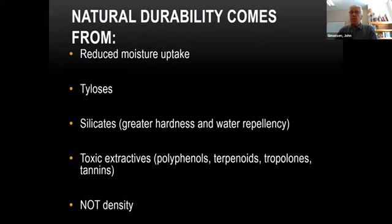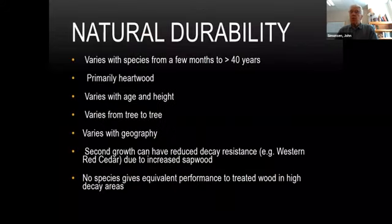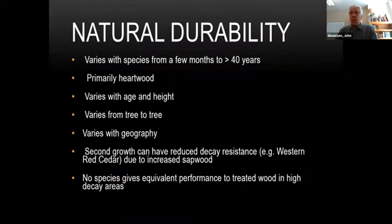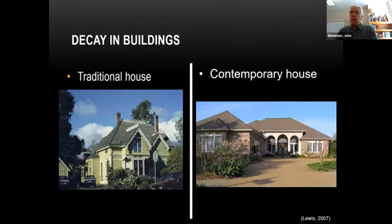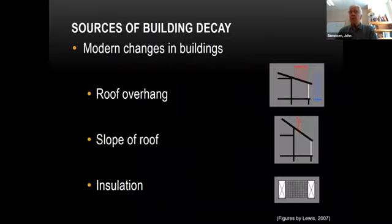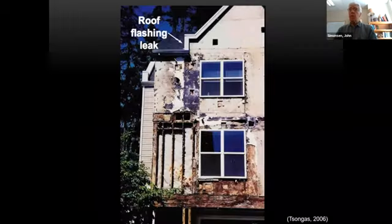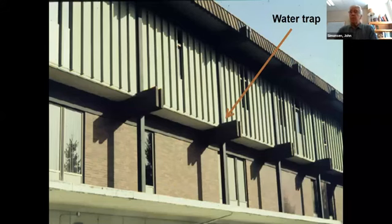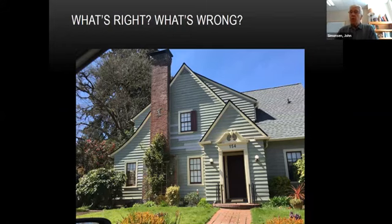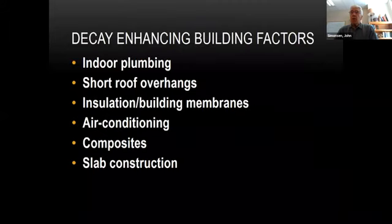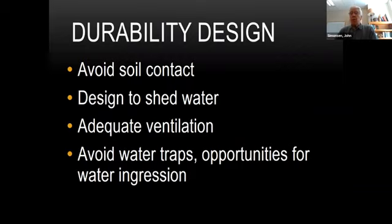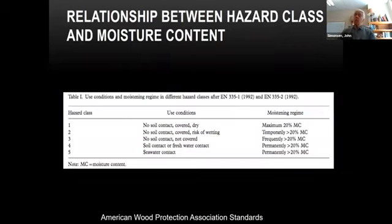We briefly covered woodpeckers, bears, and beavers that can cause wood problems, but not typically in a suburban setting — except maybe woodpeckers. Then we covered natural durability and wood protection: sapwood and heartwood, with sapwood being less durable than the heartwood. We covered different kinds of house designs and what to look for in terms of reducing moisture intrusion and preventing wood decay. The whole idea is common sense: you want to keep the wood below the fiber saturation point.